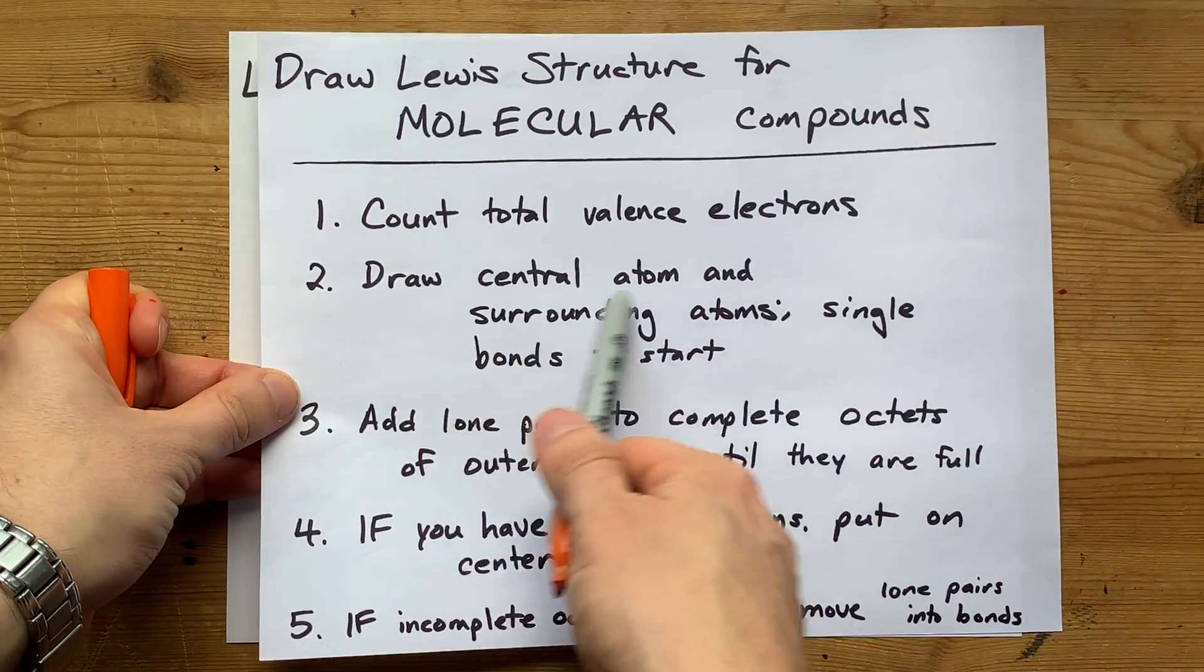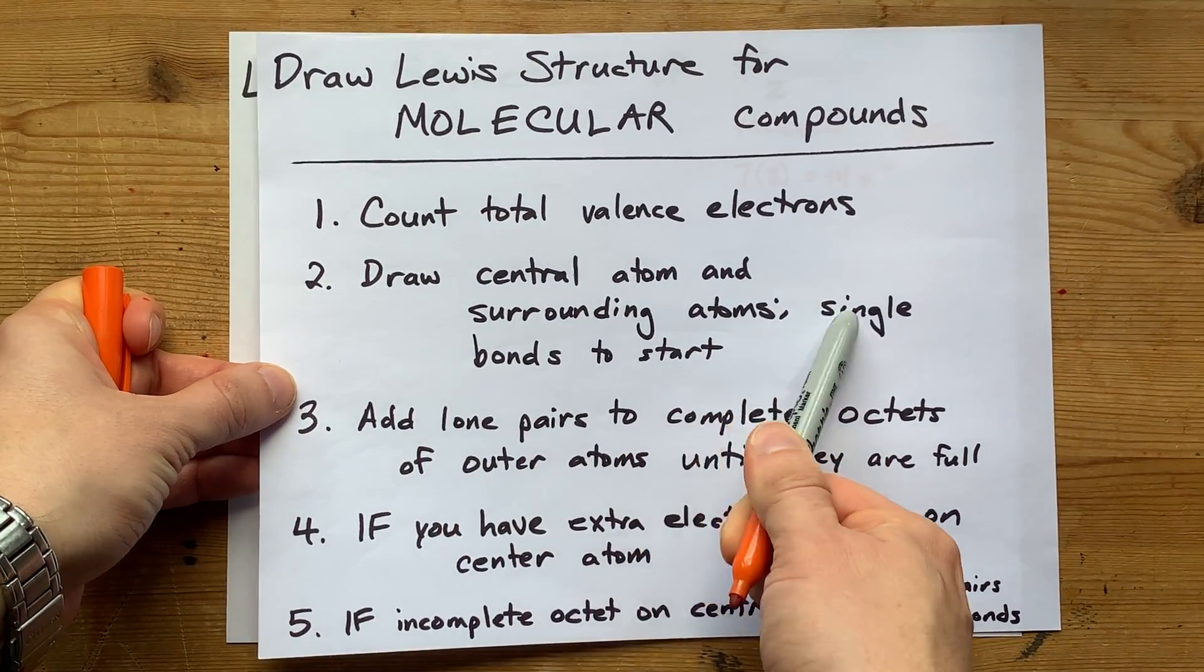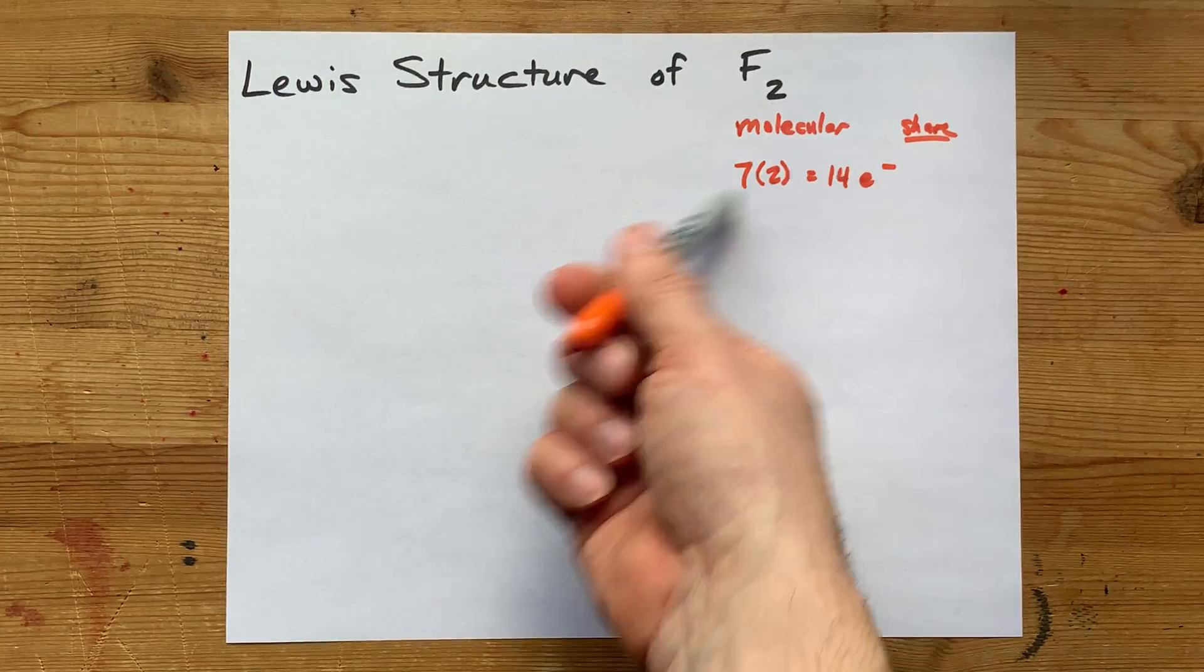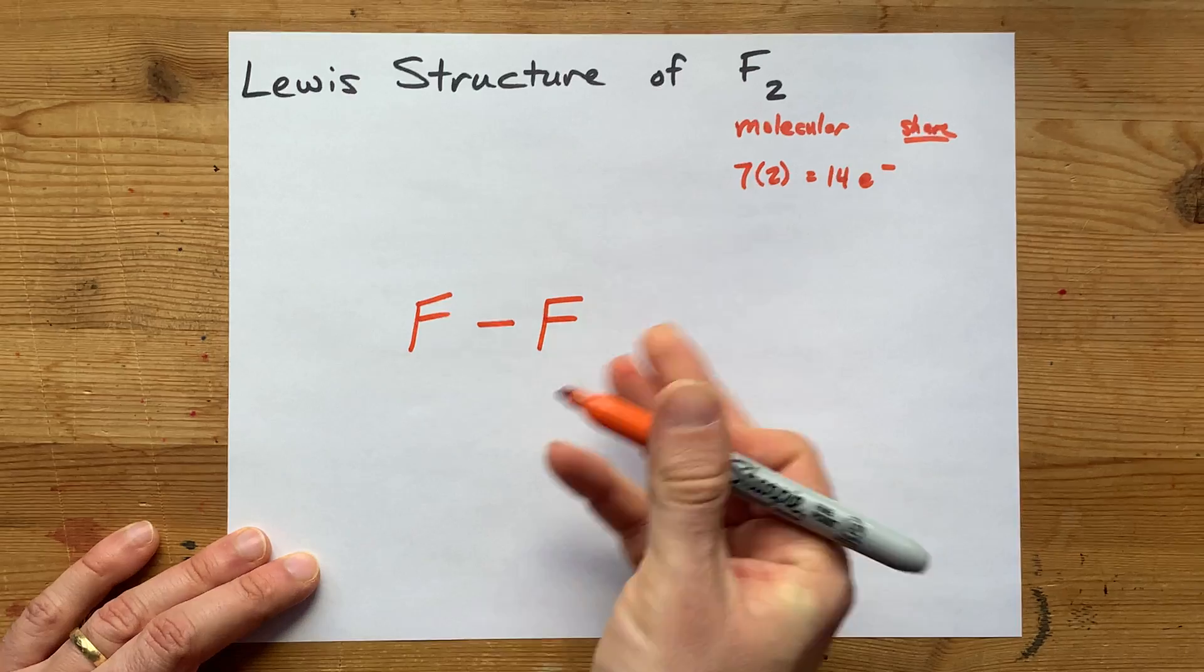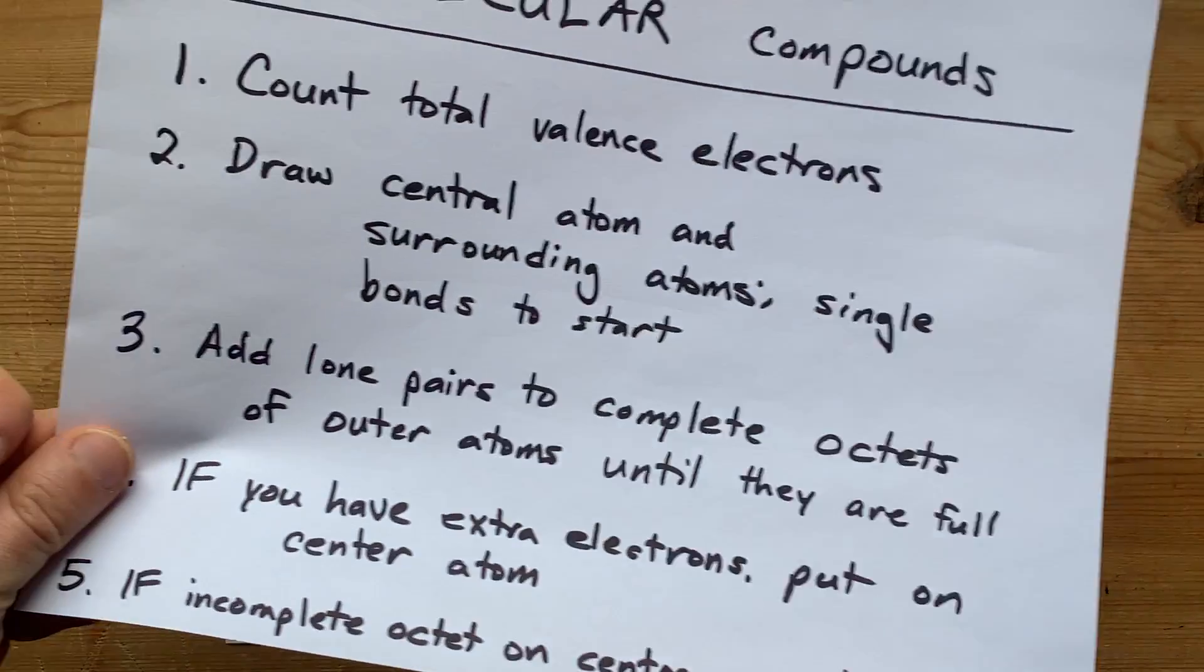Now we're going to draw the central atom and the surrounding atoms, and single-bond them to start with. There's only two atoms here, and so there isn't really a center, but I'm going to draw them and single-bond them together, just like the instructions said.